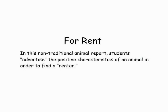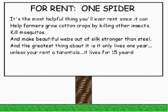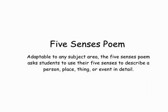For Rent — this is where kids try and sell something that's not really all that appealing. 'For Rent: one spider. It's the most helpful thing you'll ever rent since it can help farmers grow cotton crops by killing other insects, kill mosquitoes, and make beautiful webs out of silk stronger than steel. And the greatest thing about it is it only lives for one year — unless you rent a tarantula, it lives for 15 years.' So they're taking something that's not traditionally appealing and trying to make it appealing. As a teacher it gives you a different way for kids to show comprehension. The neat thing is that you can walk around the room and see right away who gets it, who understands the assignment, and where you need to remediate — then you can go back while it's still fresh in their mind.